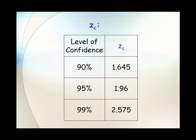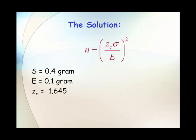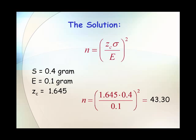And so now we can continue with our problem. We now know that Z sub C is equal to 1.645, so we will substitute into our formula, and we get that N equals the quantity 1.645 times 0.4 divided by 0.1 all of it squared, which results in 43.30 equals N.